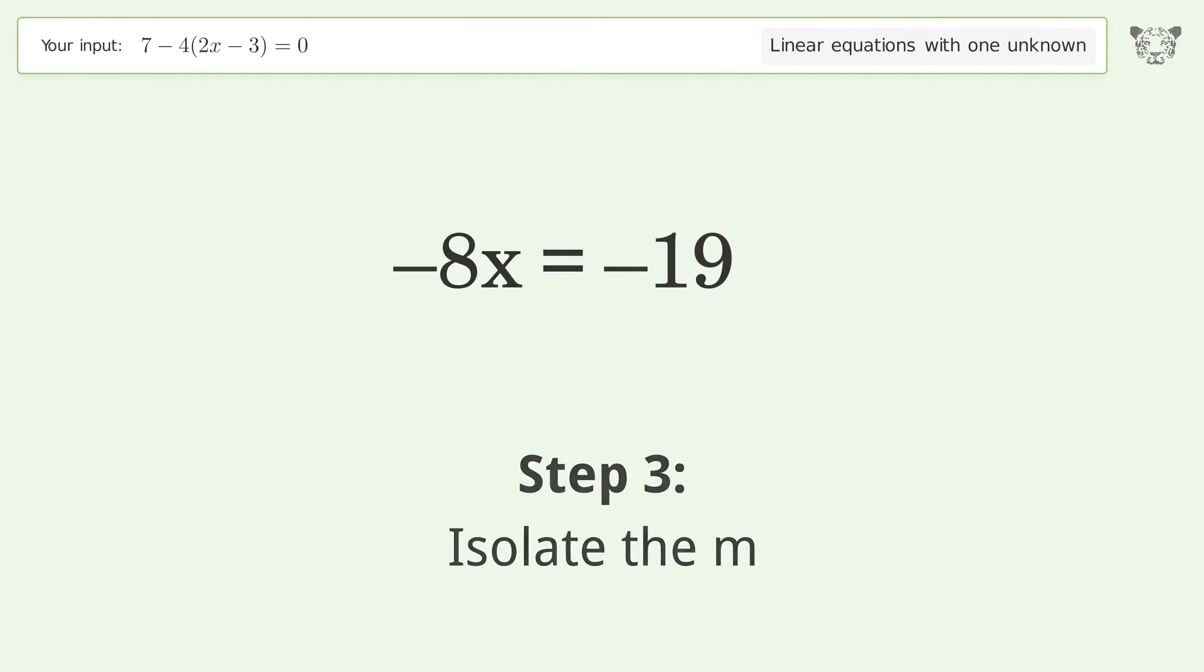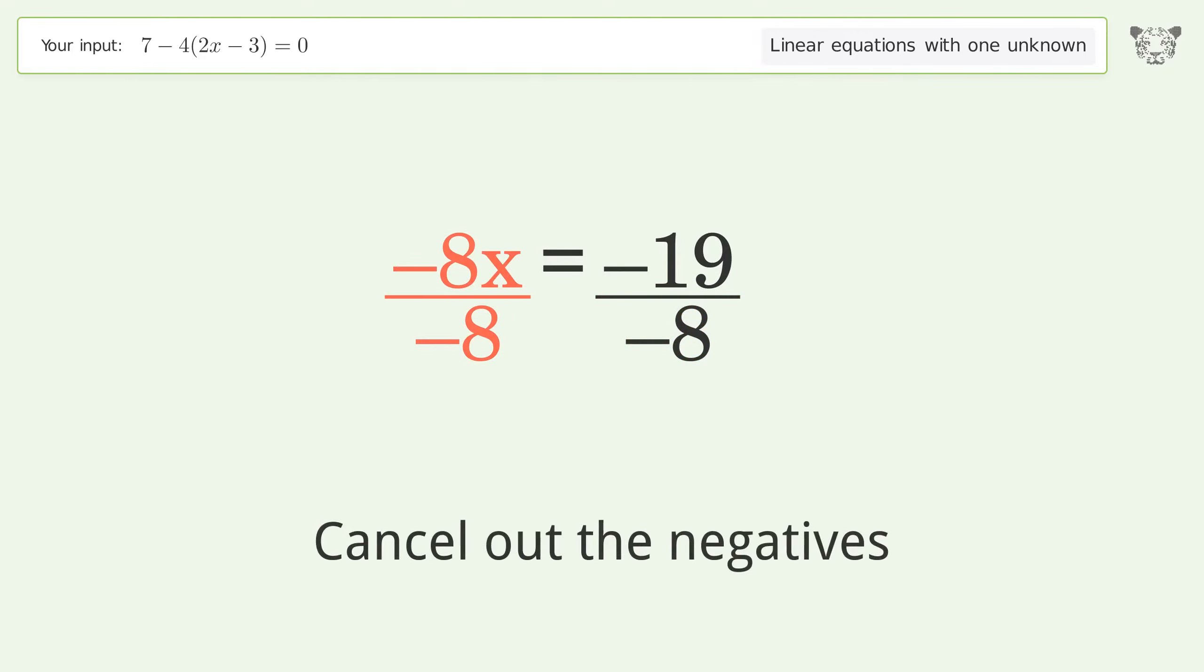Isolate the x. Divide both sides by negative 8. Cancel out the negatives. Simplify the fraction. Cancel out the negatives.